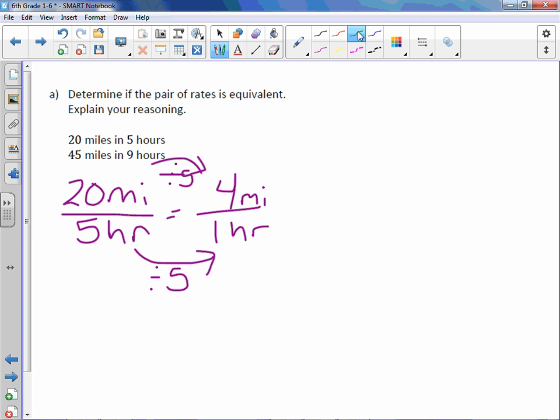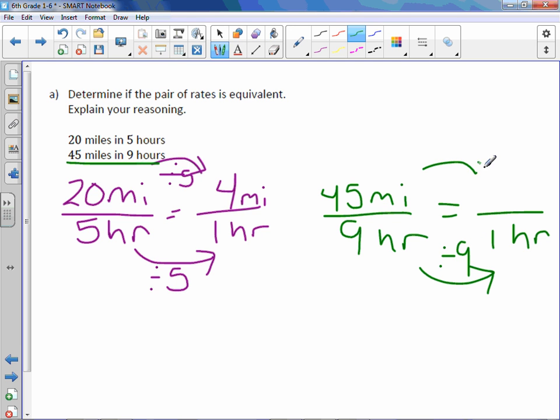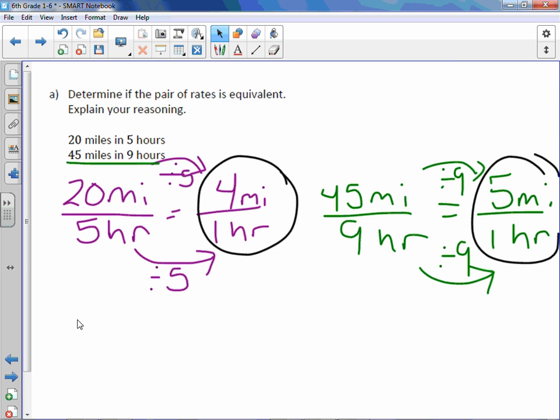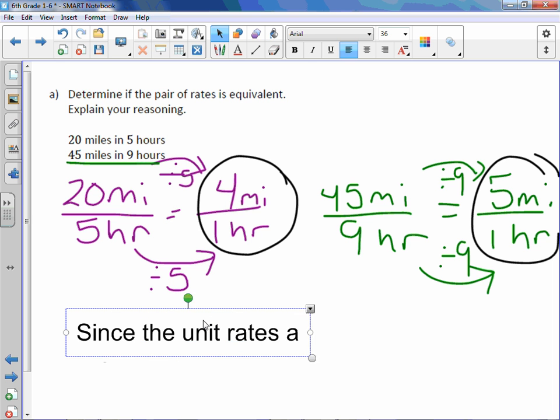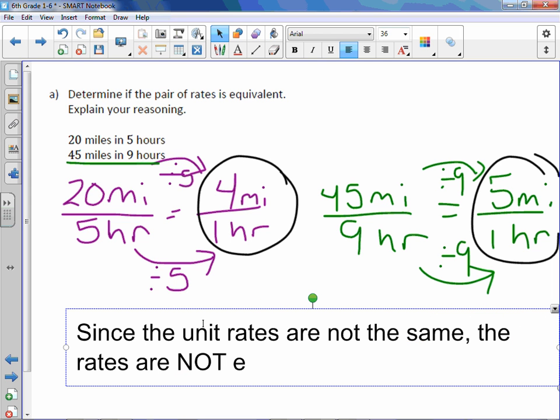The second unit rate, we have 45 miles in 9 hours. And I'm looking right here. We want to make it a unit rate, so we need the denominator to be 1. To get from 9 to 1, we divide by 9 and we do the same in the numerator. 45 divided by 9 is 5. So if you compare the two unit rates, they are not the same. Because they're not the same, these ratios are not equivalent. So when it says explain your reasoning, we're going to write just that. Since the unit rates are not the same, the rates are not equivalent.